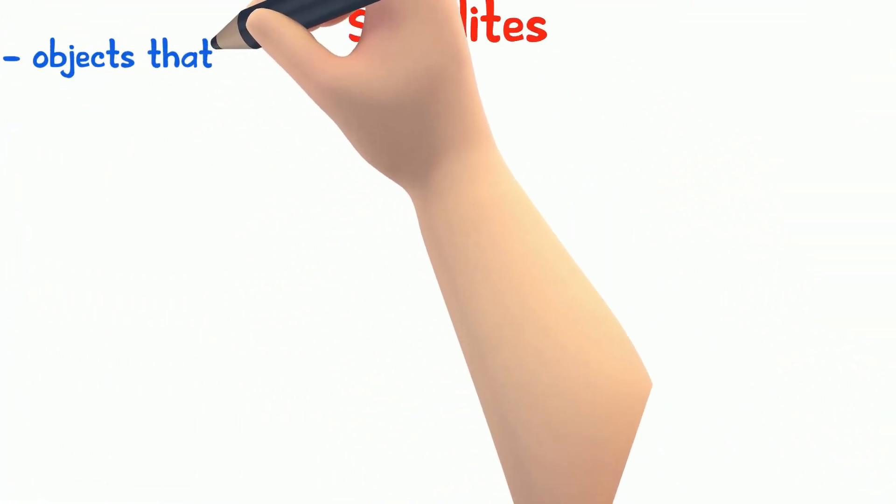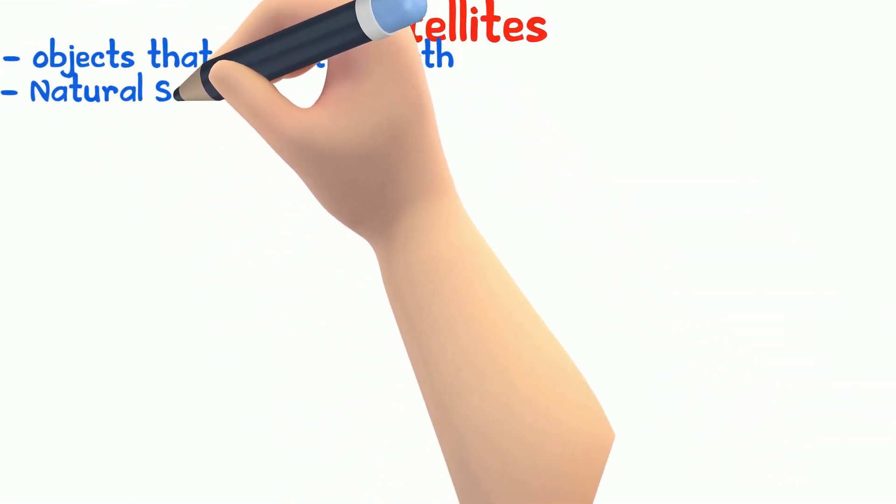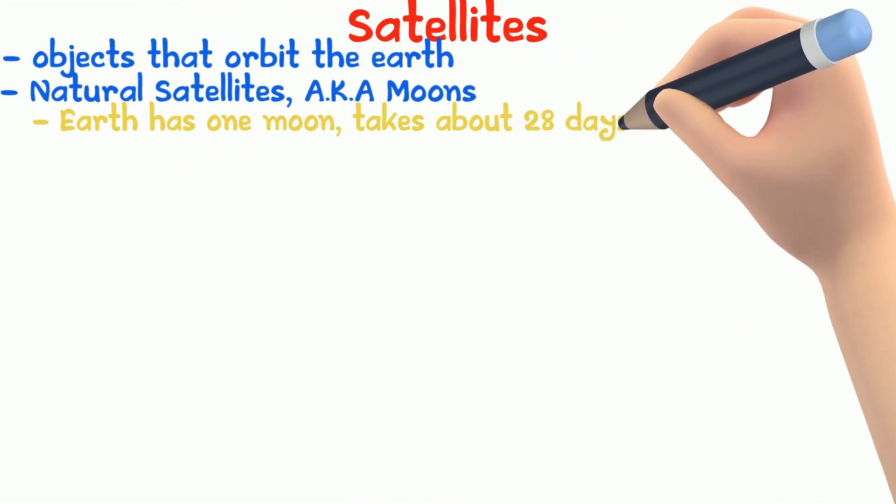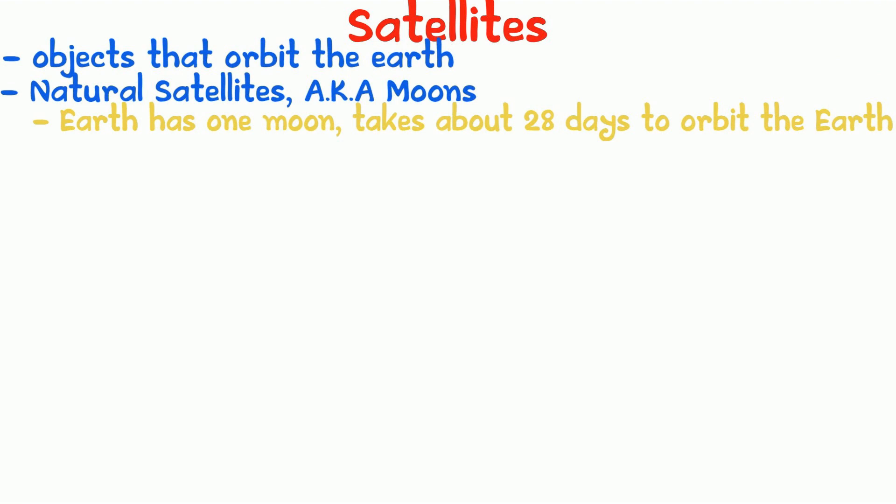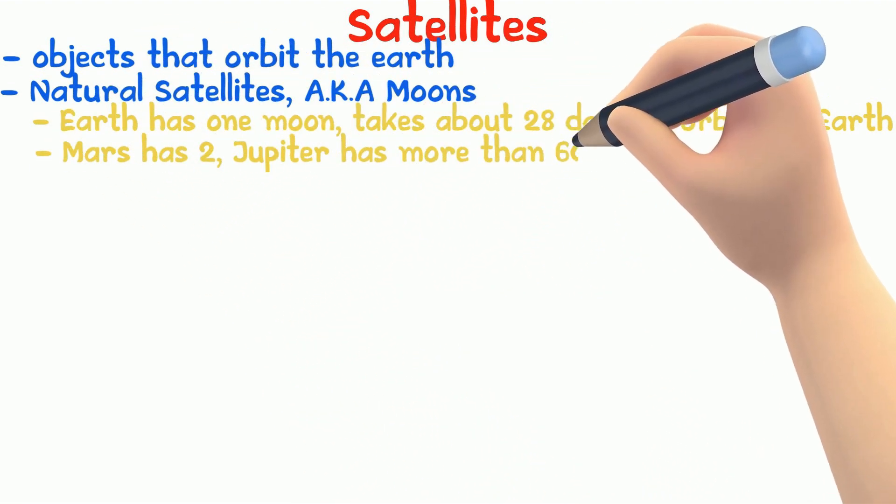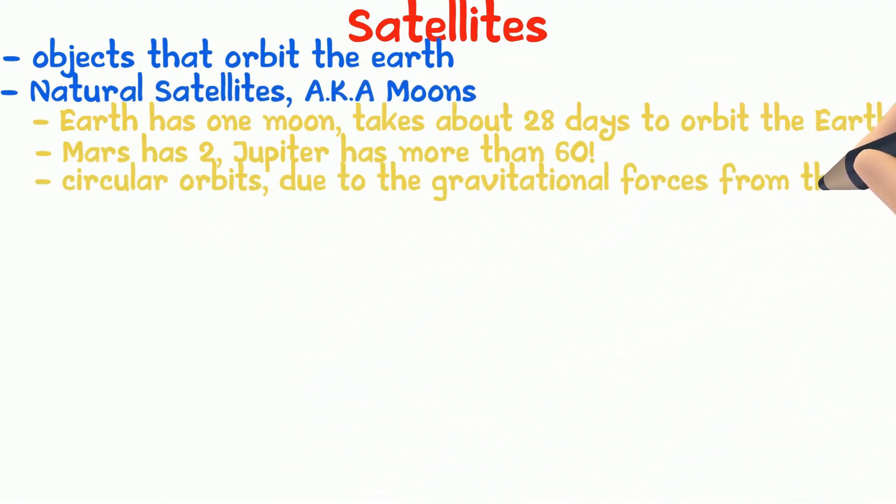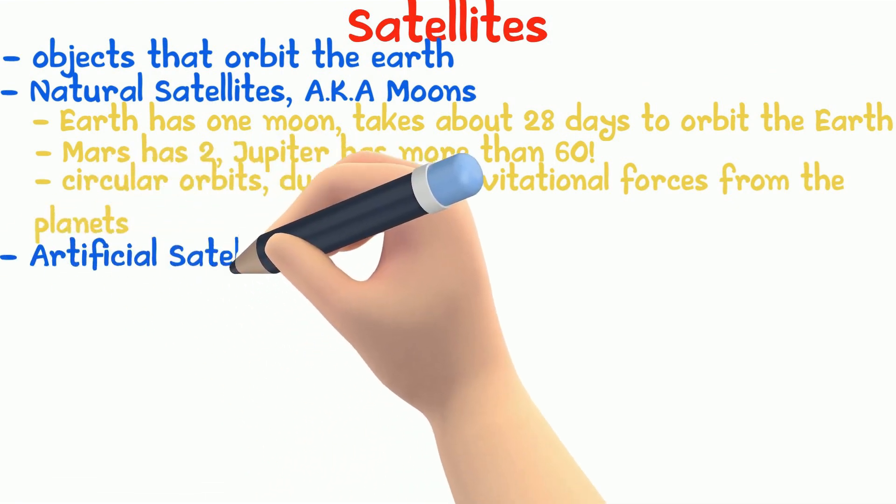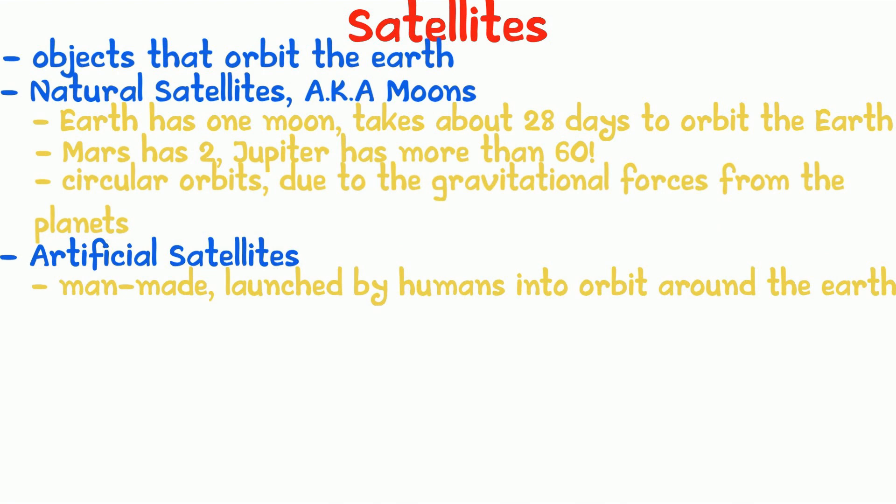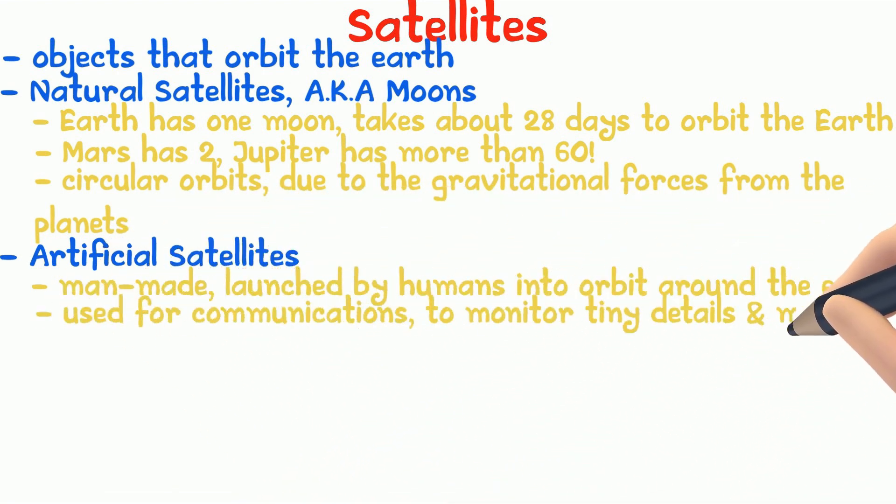Satellites are objects that orbit a planet. There are two types of satellites. Natural satellites, also known as moons. Earth has one moon that takes about 28 days to go around the earth. Many planets have moons. Mars has two moons while Jupiter has more than 60. Moons have circular orbits due to the gravitational forces from the planet. Artificial satellites are the man-made ones that humans launch into orbit around the earth. We use these satellites for communication and to monitor tiny details of the earth and many moons.